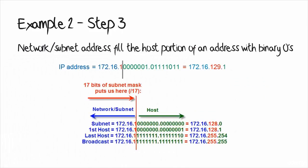To work out the network or subnet address, fill the host portion with binary 0s. The green portion of the address is filled with 0s. That gives us 172.16, then in the third octet one binary 1 followed by seven binary 0s, which equals 128 in decimal. The fourth octet filled with binary 0s equals 0. So the subnet that host 172.16.129.1 resides on is 172.16.128.0.